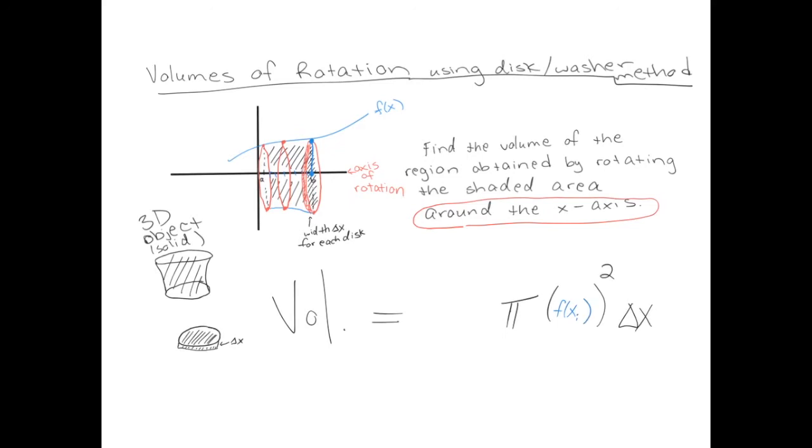So if we did it in a Riemann sum type fashion, we would add up all of those volumes. Say if I was doing a left Riemann sum, it would go from 0 to n minus 1 as usual. And finally, we take the limit as n goes to infinity. So here, n is the number of disks instead of being the number of rectangles like we saw in previous videos.